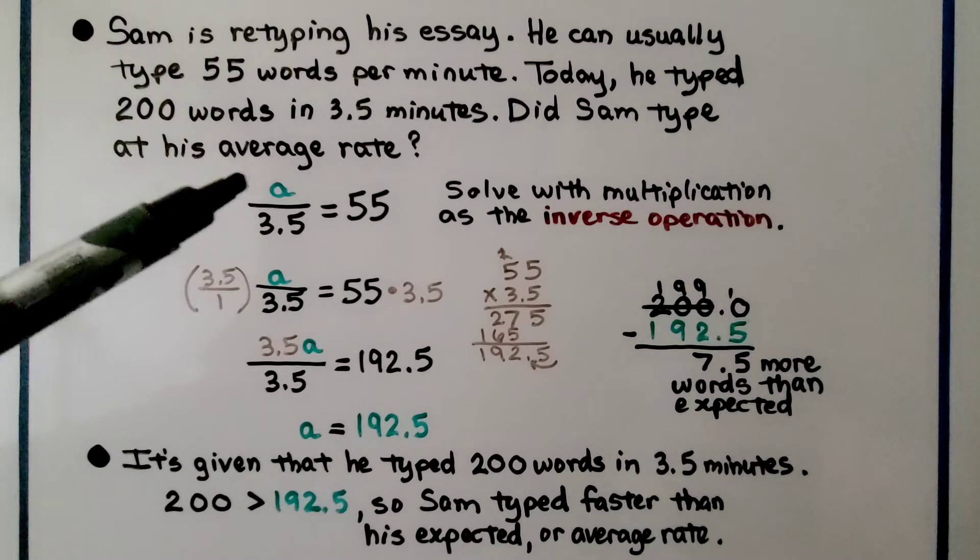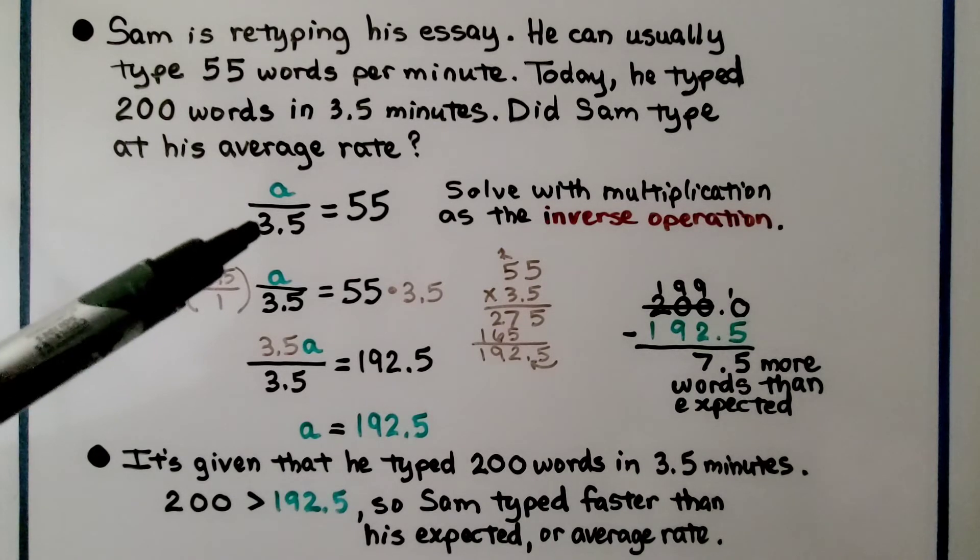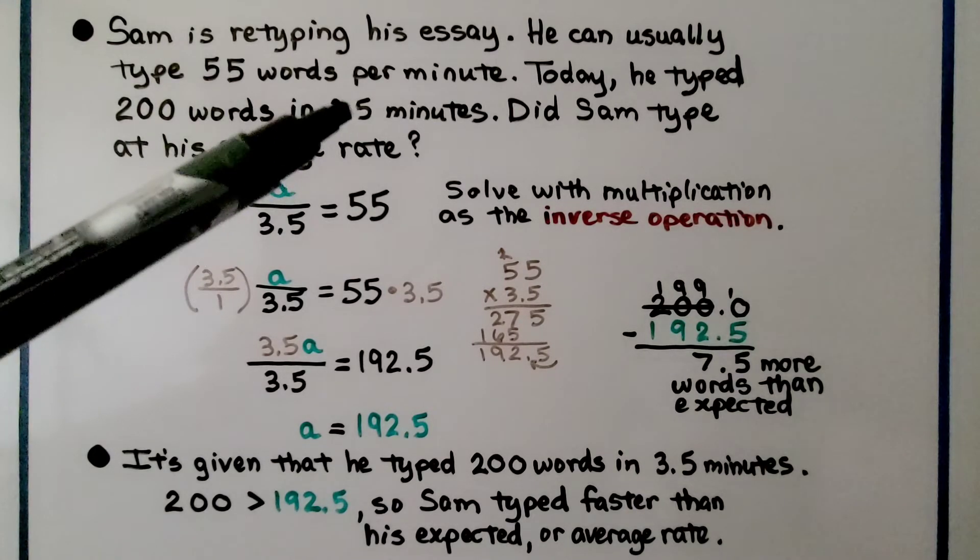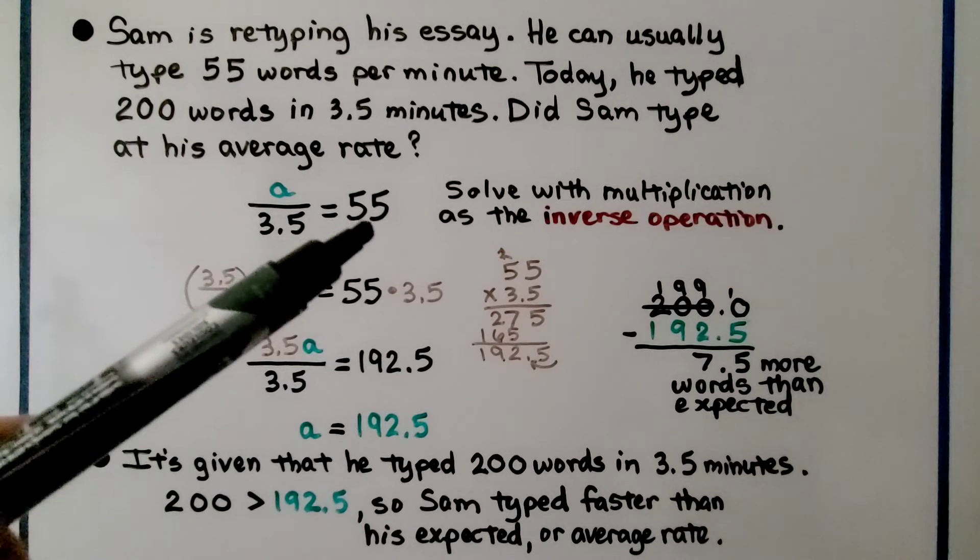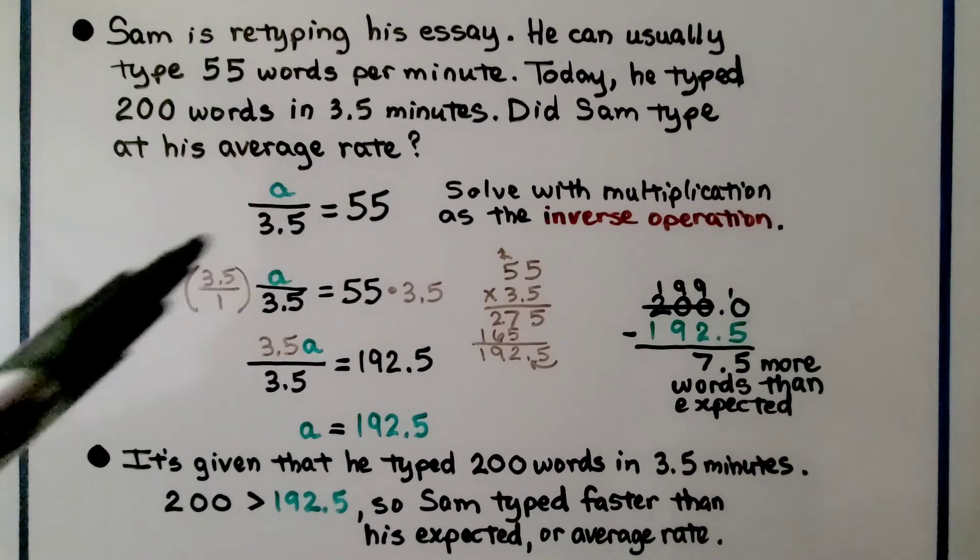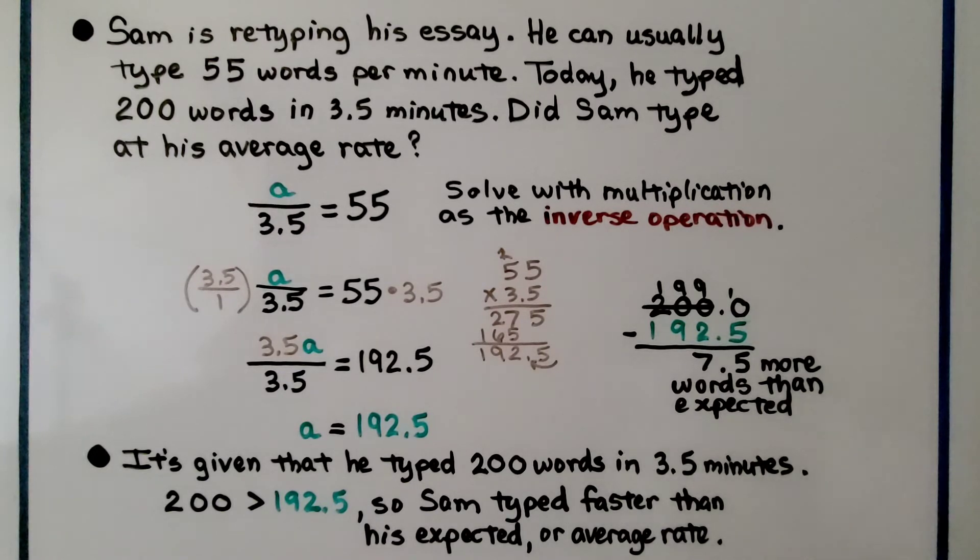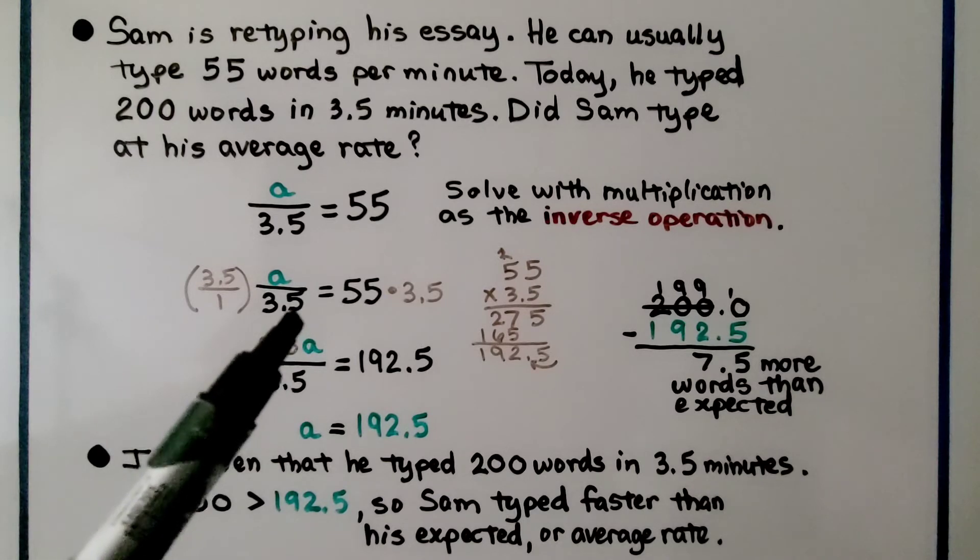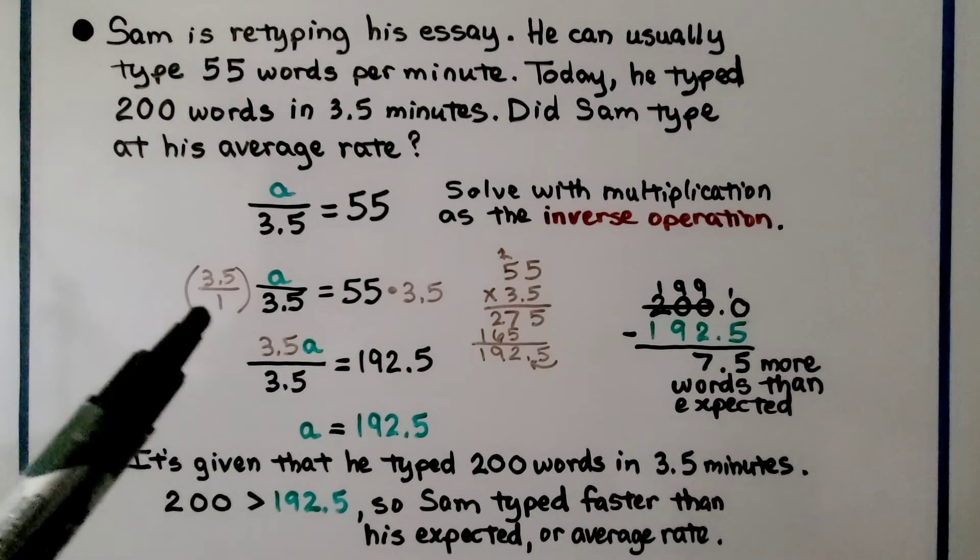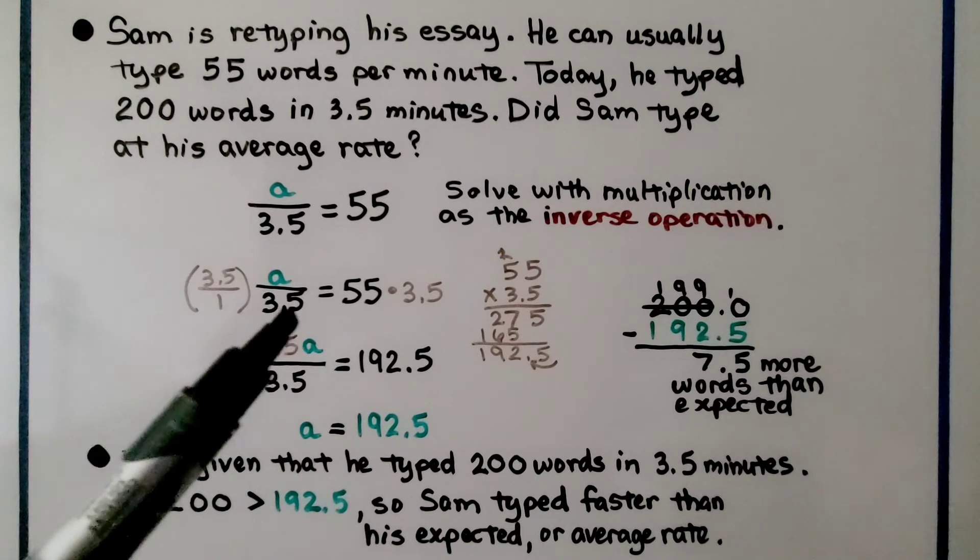We write A over 3.5 equals 55 for the 55 words per minute. We can solve with multiplication as the inverse operation. We multiply both sides by the denominator 3.5, writing it over 1 to multiply straight across.